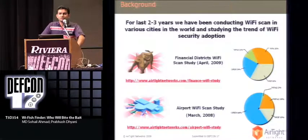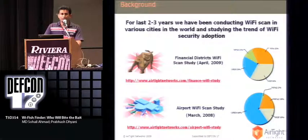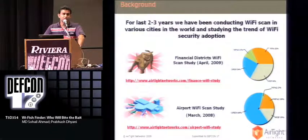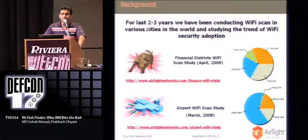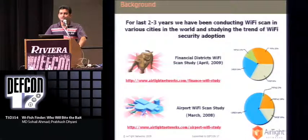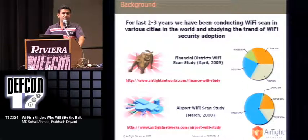Before we dive into the details of this tool, let me give you a little bit of background of how it all started. As a security company, for the last two to three years, we have been conducting a lot of Wi-Fi scans in various cities in the world and studying the trend of Wi-Fi security adoption. Some of the studies we published include financial district scans and airport Wi-Fi scan studies. We found approximately 50% of Wi-Fi networks were using either no encryption or weak WEP encryption in the financial district scan, and approximately 70% of networks were using insecure Wi-Fi configurations in the airport scan study.